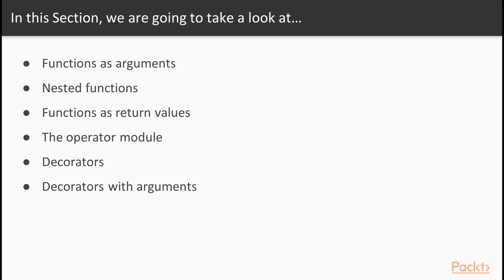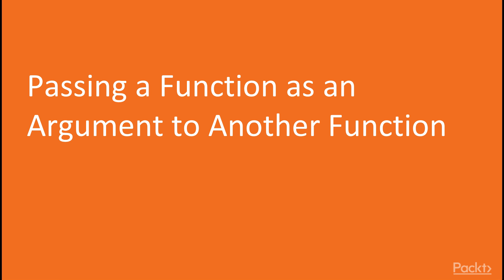What are we going to learn in this section? First, in this video, we're going to take a look at functions as arguments that are passed to other functions. Then we're briefly going to consider nested functions, which are functions defined inside the body of another function. Before we move on to functions that are returned as return values from other functions. We're also going to take a look at the operator module, which is very important because it offers many of the standard operators that are normally part of the Python syntax, such as addition — which is part of the Python syntax as a plus — as regular functions. Then we're going to look at decorators, which are a particular kind of higher order function implemented in a very Pythonic way. And finally, we're going to take a look at decorators that accept arguments or keywords themselves, which are a particularly complicated case of regular decorators. But let's start with the video: passing a function as an argument to another function.